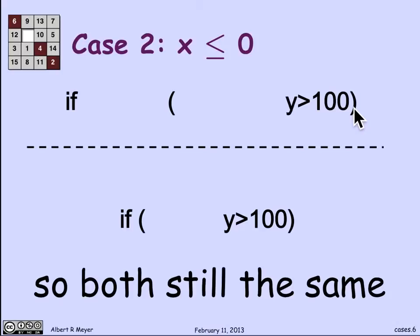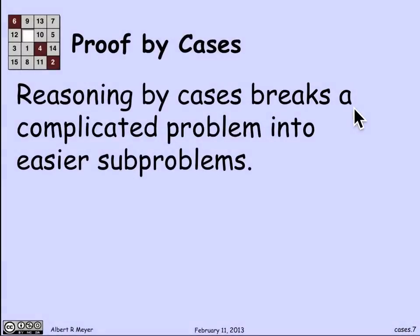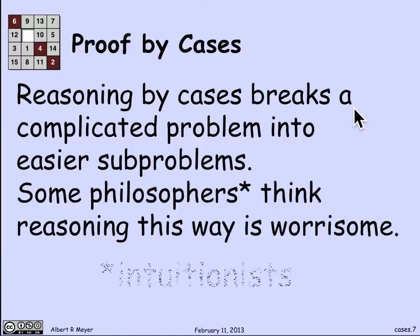That's why it's safe to replace the upper complicated expression by the lower less complicated expression. So in general, as I said, reasoning by cases breaks complicated problems into easier sub-problems, which is what we just saw there. It wouldn't be clear how to prove that these two things were equivalent, but I chose those cases, and it made each case easy to figure out that the two things were the same.